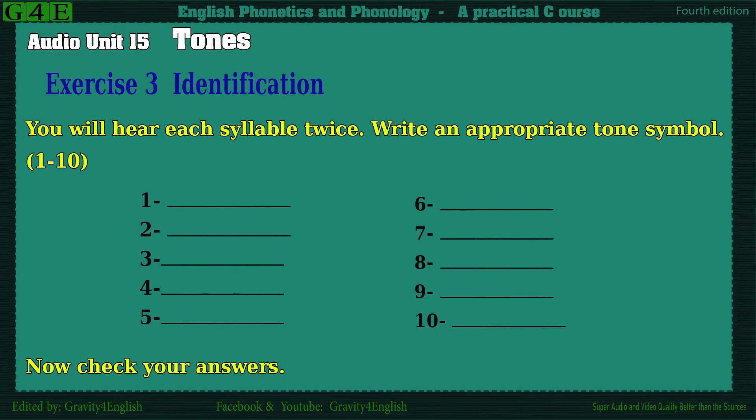Exercise 3: Identification. You will hear each syllable twice. Write an appropriate tone symbol. One. One. Two. Two. Three. Three. Four. Four. Five. Five.